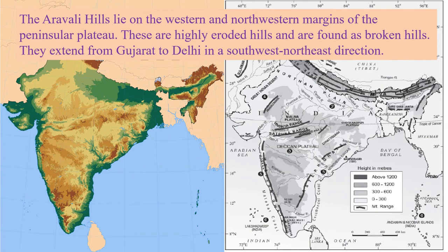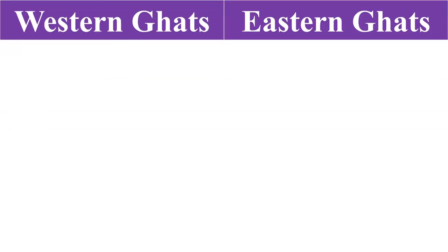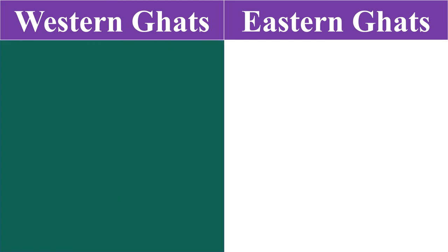The Aravalli Hills lie on the western and northwestern margins of the Peninsular Plateau. These are the oldest mountain ranges in the world — highly eroded and found as broken hills. They extend from Gujarat to Delhi in the southwest-northeast direction.